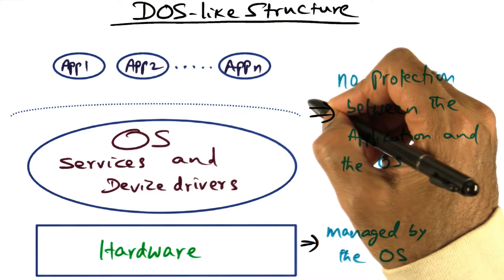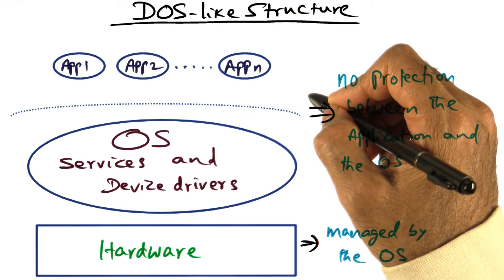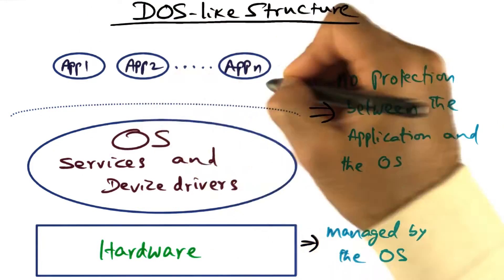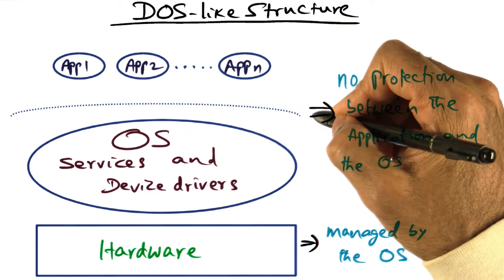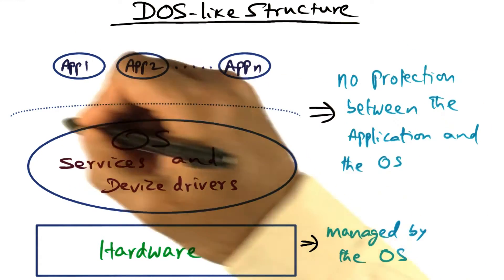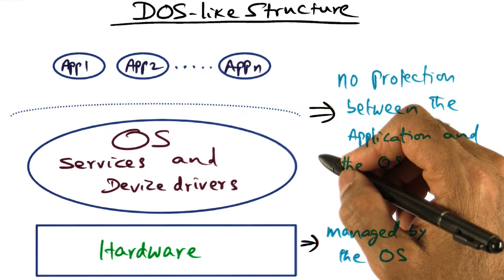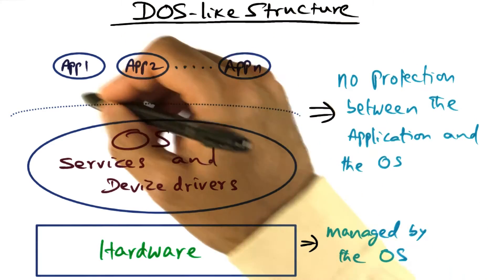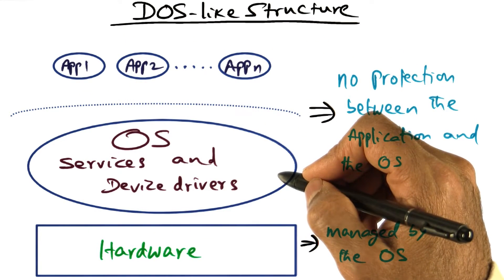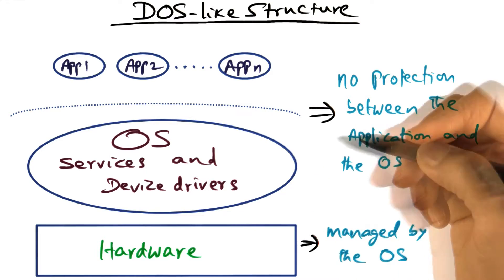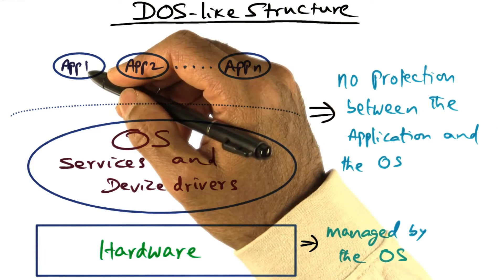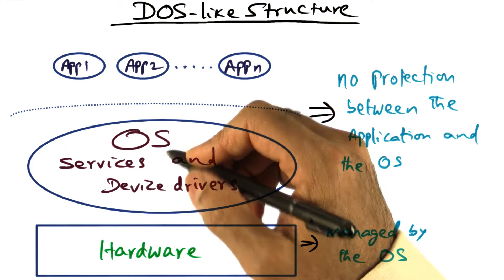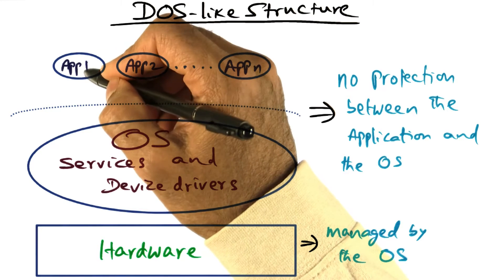In the DOS-like structure, the main difference from the monolithic structure shown earlier is that the red line separating the application from the operating system is now replaced by a dotted line. What that means is there is no hard separation between the address space of the application and the address space of the operating system. The good news is an application can access all the operating system services very quickly, as they would any procedures they may execute within their own application.